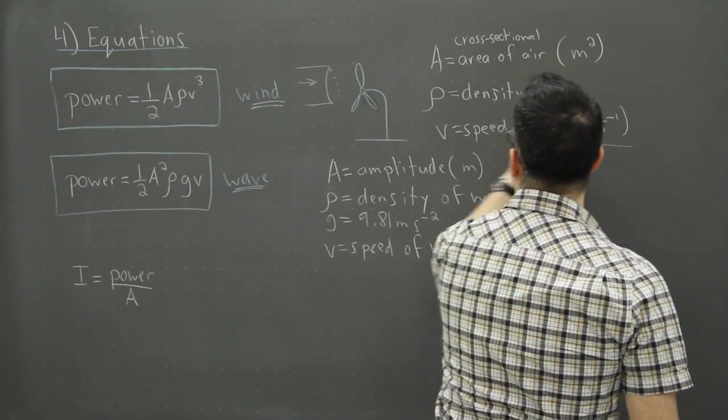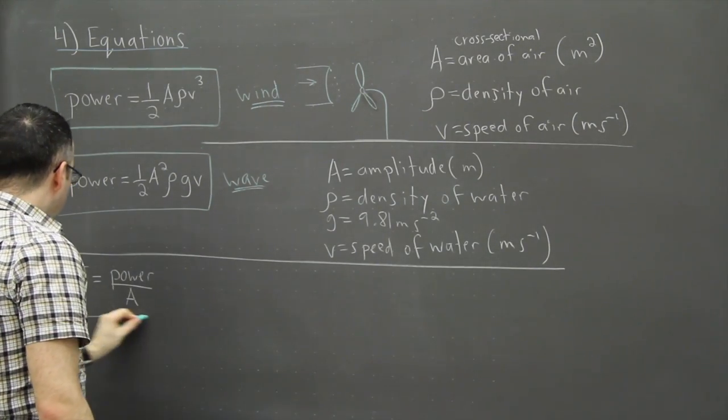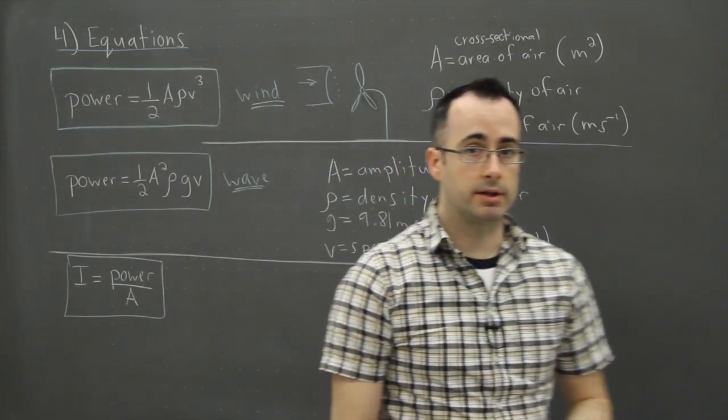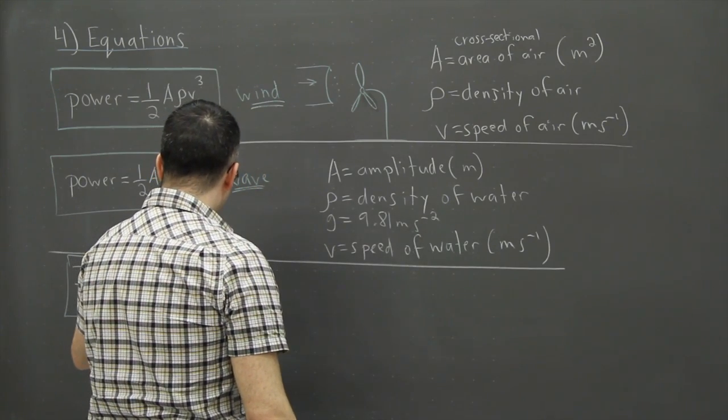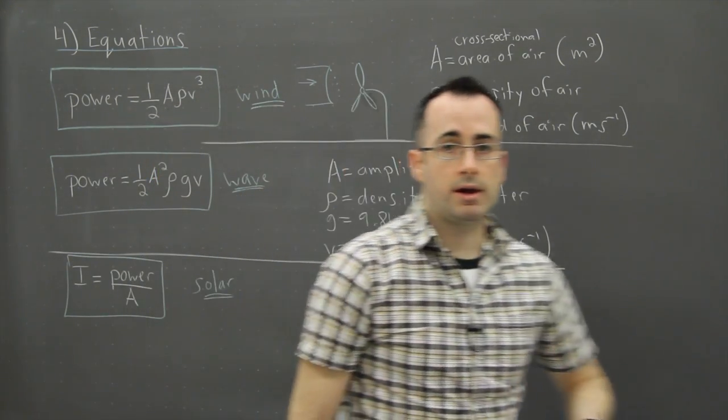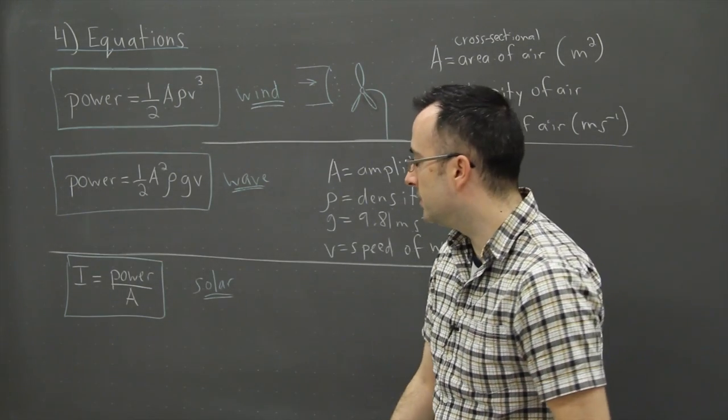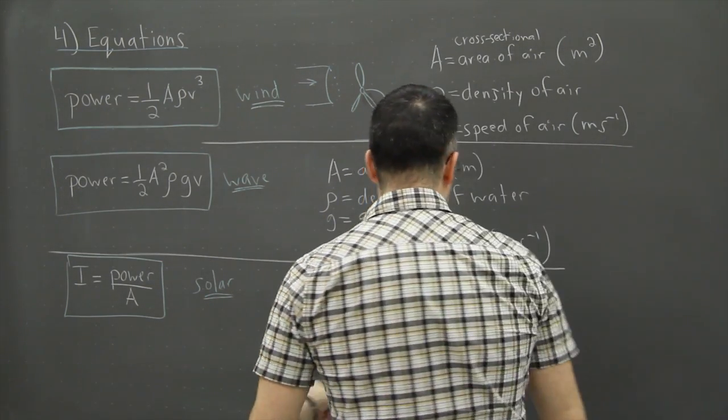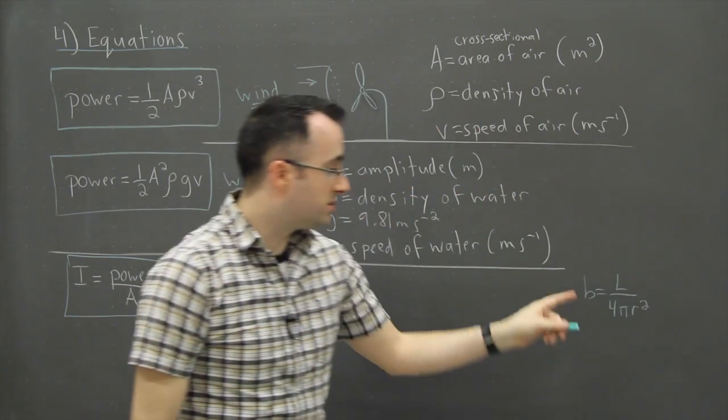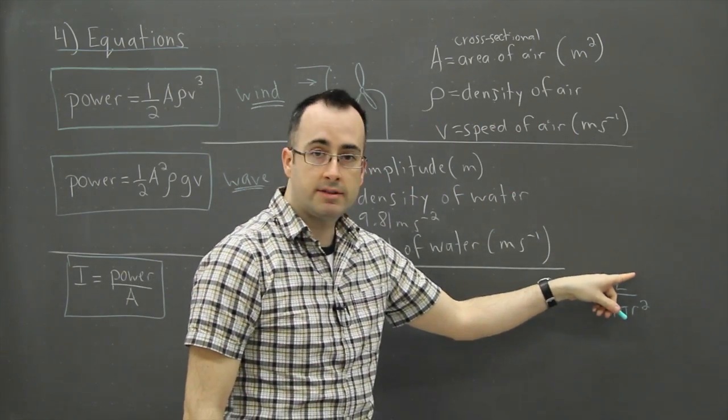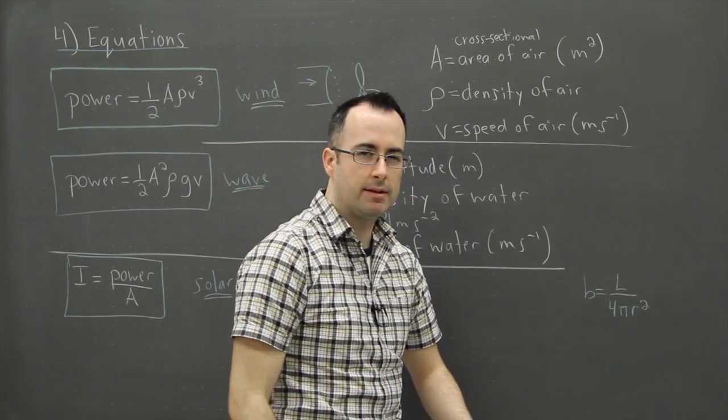Now we have this third one. It says I equals power over A. So what does that mean? Well, this one - I, that's intensity - so that's solar power. This has something to do with how stuff from the sun reaches us. I don't really like the format of this one because if you look at the astrophysics option we have a much better version of this equation. Just off to the side I'll show you the actual better version: the apparent brightness is equal to the luminosity of a star divided by 4πr², where r is the distance from us to the star. Sometimes they put a d here instead.